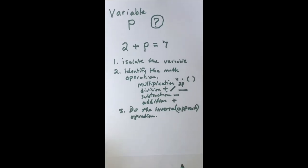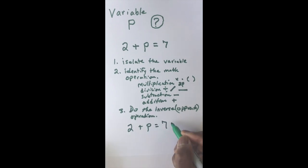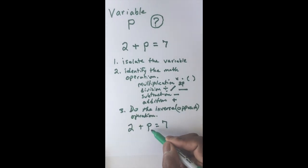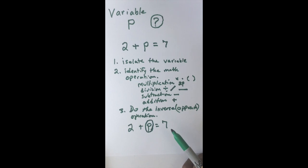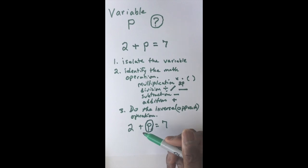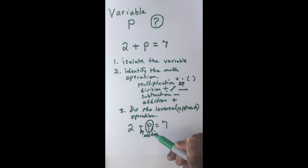So let's go through this equation. We have 2 plus P equals 7. We identify the variable — P represents something we don't know. This equation means: if we add 2 to something we don't know, it gives us 7. Let's find the operation. See the plus sign? So that tells us it's addition. Now we want to do the inverse, which is subtraction.